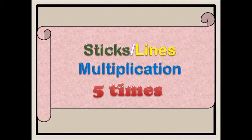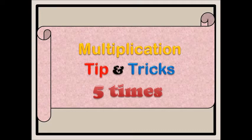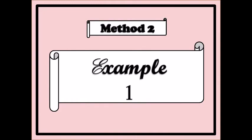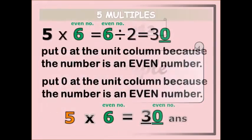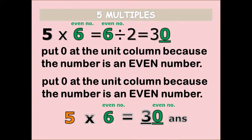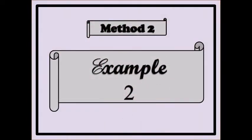Six lines multiplication. Example two: we have five times six. This is another method. Any number times five — if that number is an even number, divide it by two and then put zero at the end. So five times six equals six divided by two equals three, and then you put zero behind it because six is an even number. So five times six equals thirty.